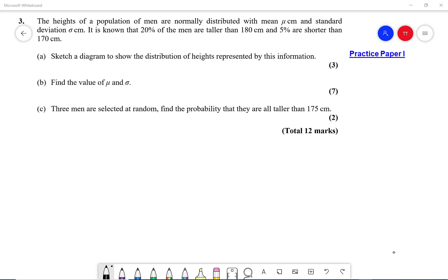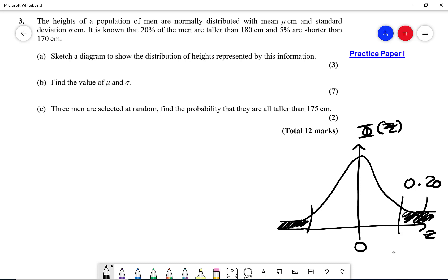Find the probability that they are all taller than 175 centimeters. So the first thing we do for a question like this is to draw a normal diagram, and because the standard normal distribution, its mean is always zero. Now we know that 20% are taller than 180, so we can shade this and call this 0.20, but we don't know what the z value is here. We know that 5% is less than 170, but again we don't know what the z value is.